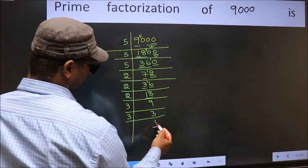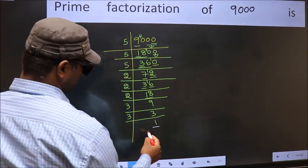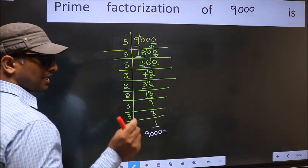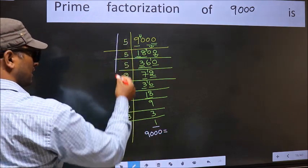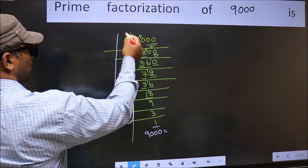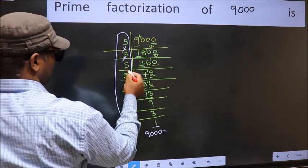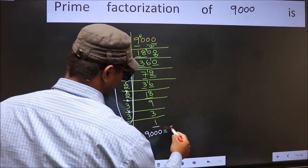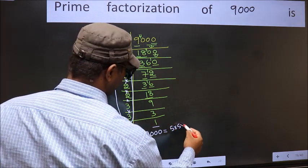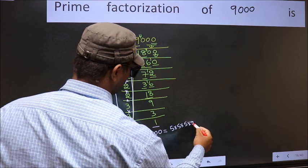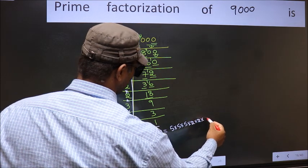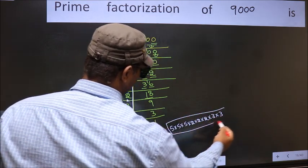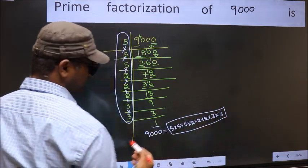So we got 1 here. So the prime factorization of 9000 is the product of these numbers, that is 5 into 5 into 5 into 2 into 2 into 2 into 3 into 3. This is the prime factorization of 9000.